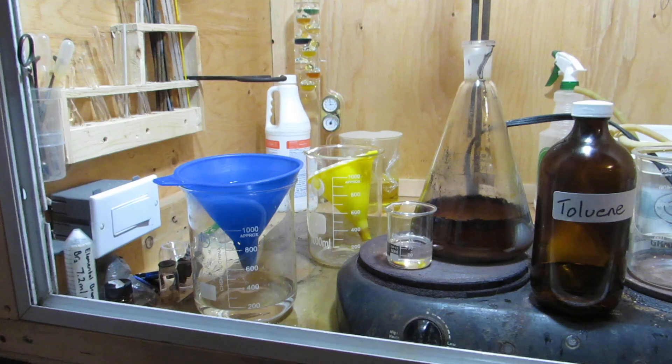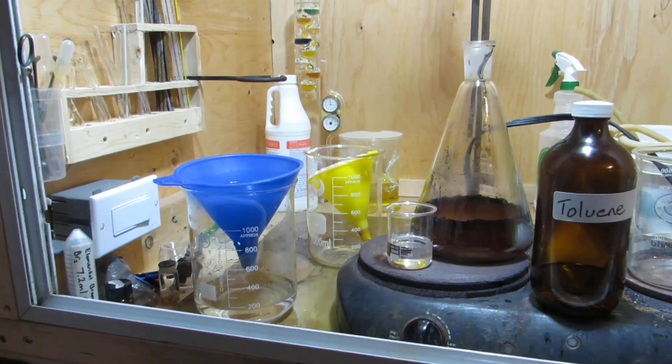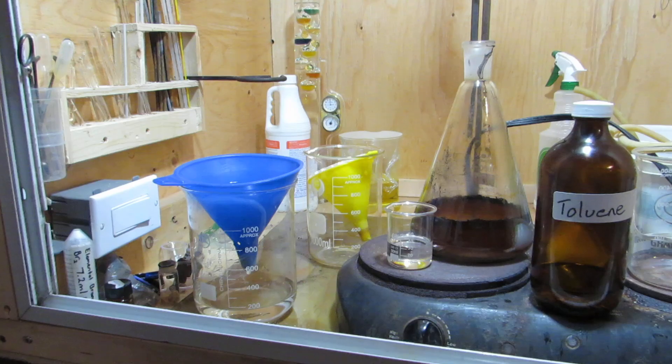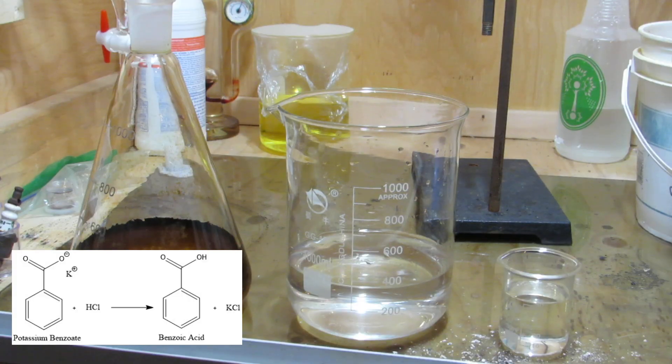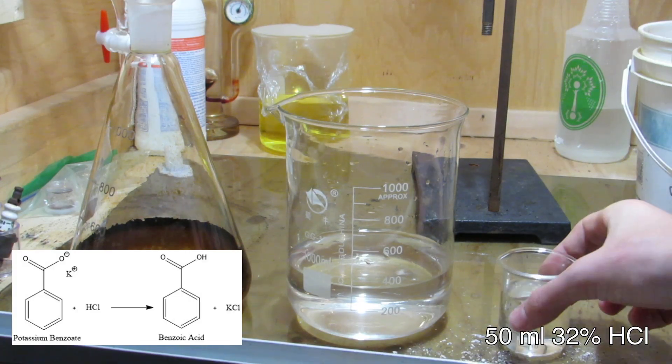The aqueous layer was then filtered through a finer filter to fully remove the fine manganese dioxide particles that passed through during the first filtration. After filtering, 50 mils of concentrated hydrochloric acid was then added to the solution.